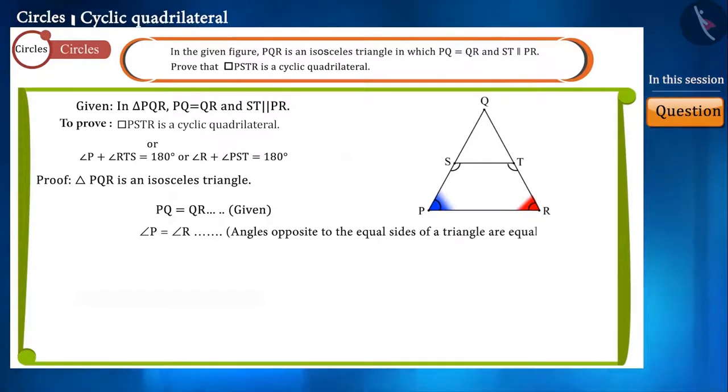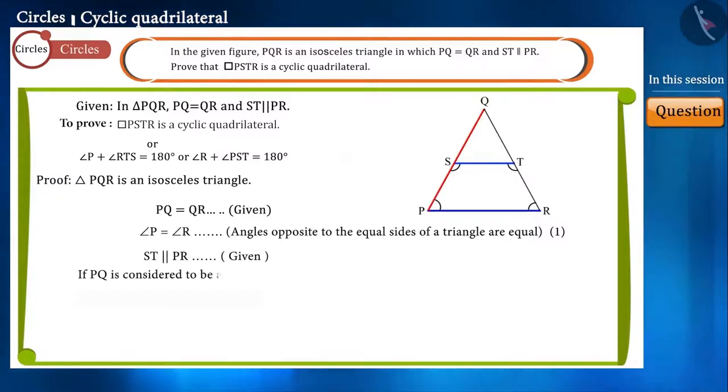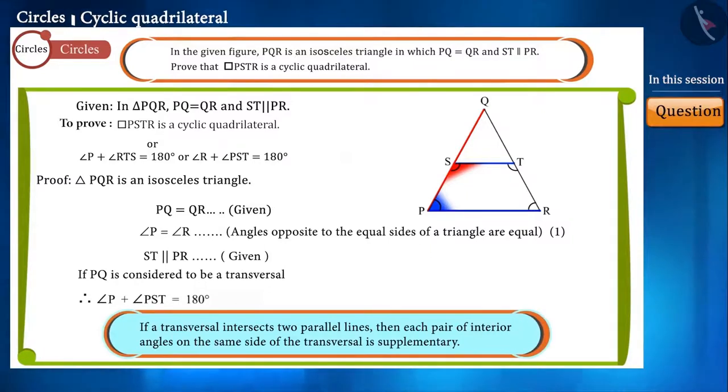Consider this as equation 1. It is given that line segment ST is parallel to PR. If PQ is considered a transversal, then the sum of angle P and angle PST will be 180 degrees, because if a transversal intersects two parallel lines, then each pair of interior angles on the same side of the transversal is supplementary.